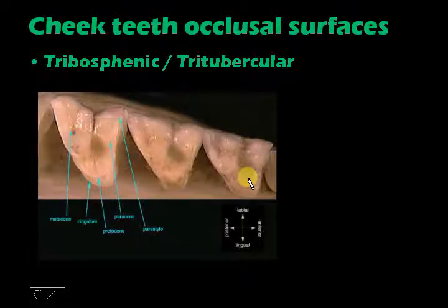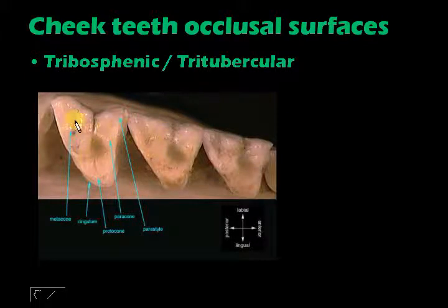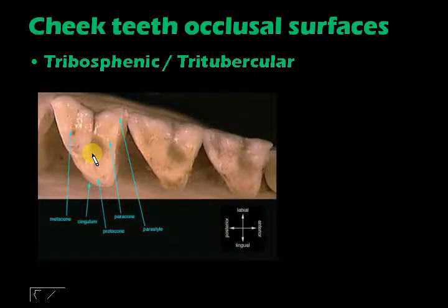Now let's look at the types of occlusal surfaces of the cheek teeth. The first is tribosphenic or tritubercular, which is one of the most primitive types of occlusal surfaces, and you mostly find these in insectivores. You can review the anatomy of this tooth type from the earlier slide.